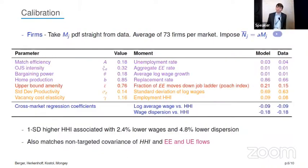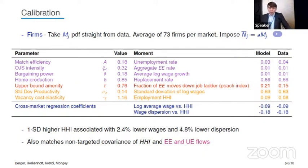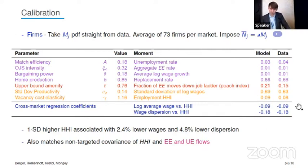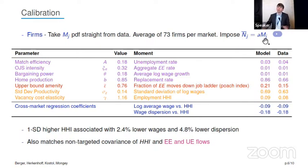With market definitions and concentration measures in hand, we read mj — the number of firms in each market — straight from the data and feed that into our model. On average there are about 73 firms per market in Norway, so markets look fairly competitive, but our Herfindahl indicates competition is equivalent to about 10 equally sized firms. We also posit a linear relationship between the number of workers and the number of firms in a market, which we argue is a good fit in the data.